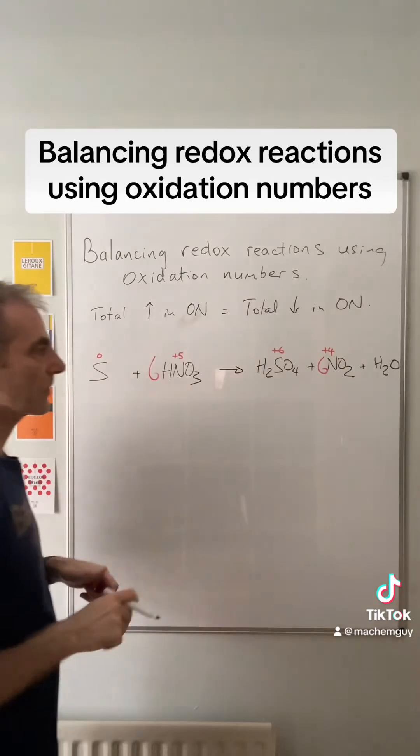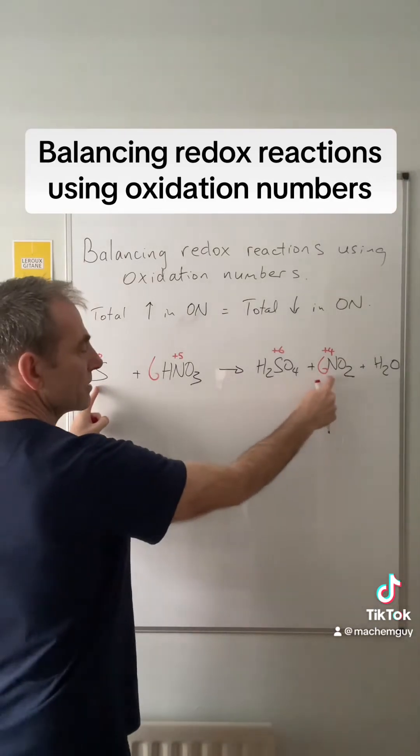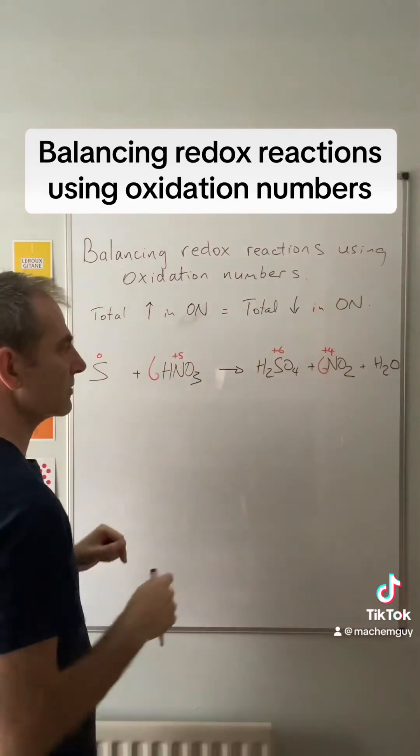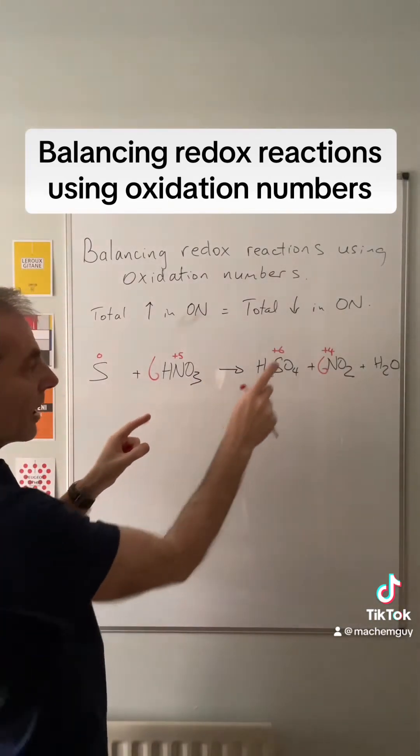Now what we mustn't do now is change anything about these four—these are the things that have changed their oxidation number. So the last thing we need to do is just get the hydrogens and the oxygens sorted.